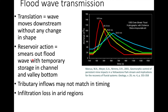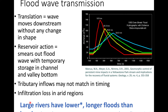The combination of reservoir action, mismatched tributary inflows, and infiltration loss means that in general, large rivers have lower peak flows per unit watershed area and longer-lasting floods than headwater streams. This is perfectly illustrated by the Mississippi River, where flooding starts up in Minnesota in February and March and is still going on down in New Orleans well into the summer. The floods by volume are much larger in New Orleans than in Minnesota, but if you divide by watershed area, the peak is not as pronounced. However, they occur later and last much longer.